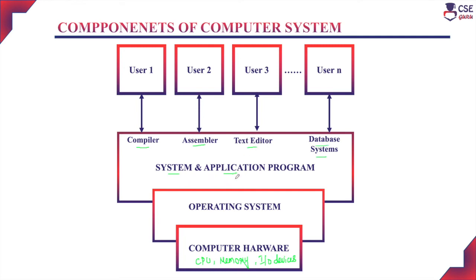Application programs are applications run for user-specific needs. Users can install application programs whenever required. Examples include word processors, PowerPoint, and Adobe Photoshop. These application programs run on the basis of system programs — that is, system programs provide an environment to run user application programs.